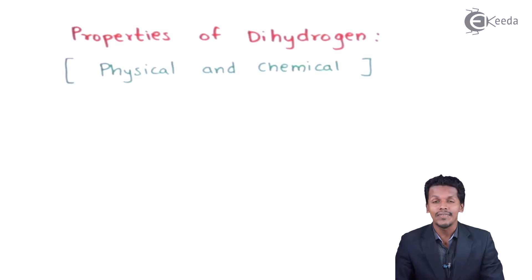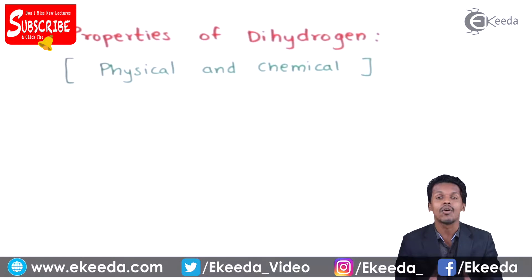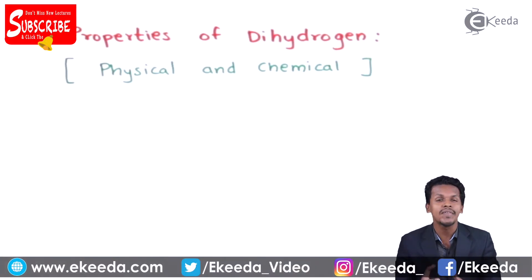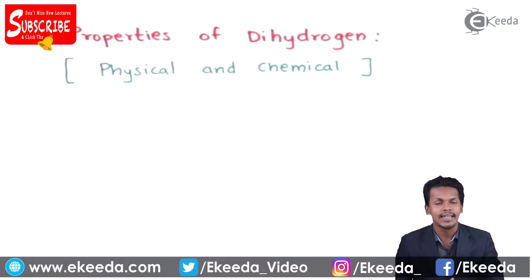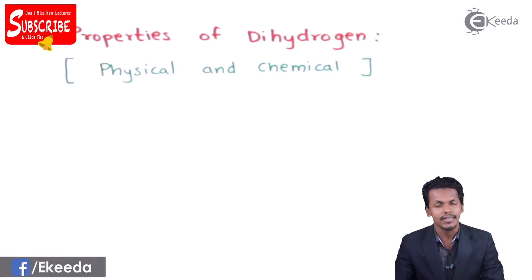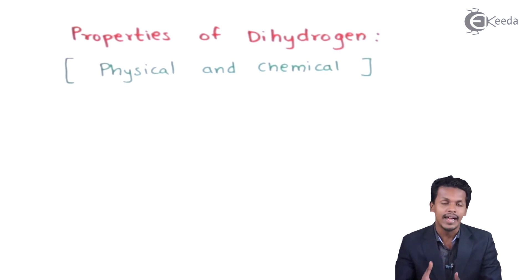Here we are going to discuss about the physical as well as the chemical properties of dihydrogen. Talking about the physical appearance, dihydrogen is basically gaseous and it is an odourless gas which is not soluble in water. Hydrogen has a very high bond enthalpy, so that's the reason we can't break it very easily — we have to provide high temperature and more energy for the reaction to occur.